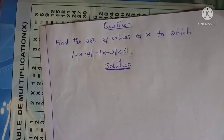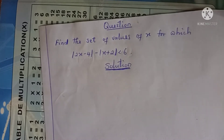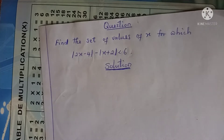Hello guys, today we are going to be solving a very interesting inequality. We're going to be solving the inequality: the absolute value of 2x minus 4, minus the absolute value of x plus 2, which is less than 6. To solve this inequality, I will start by defining the two absolute value functions.